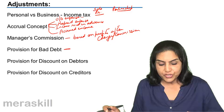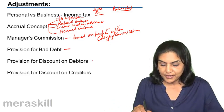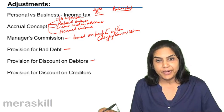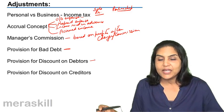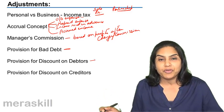Next, we will also discuss a provision for discount on debtors. When money is received from debtors, when money is received for early payment, very often we may offer a discount, which means the discount which we allow is a small loss to us.